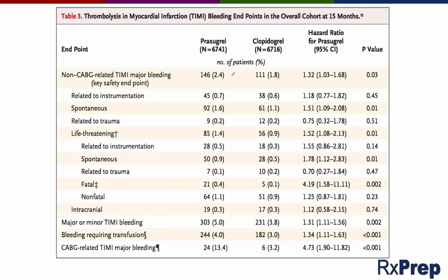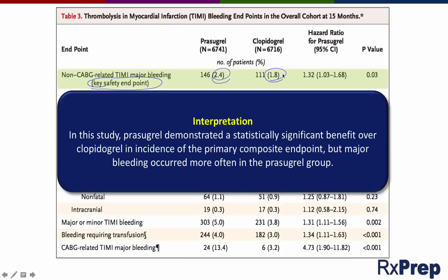Now let's look at the safety data. The key safety endpoint was major bleeding. Try not to get distracted by unfamiliar terms like TIMI major bleeding — just focus on the one labeled key safety endpoint. Major bleeding occurred in 2.4% of patients in the prazegrel group versus 1.8% in the clopidogrel group. So overall, prazegrel demonstrated a statistically significant benefit over clopidogrel in the primary composite endpoint, but major bleeding occurred more often in the prazegrel group.